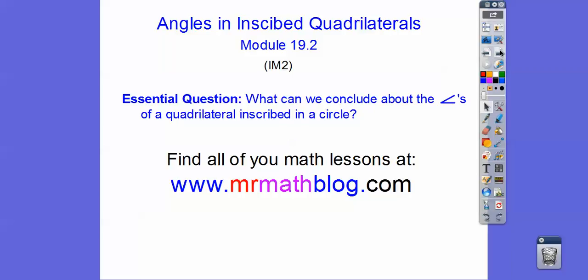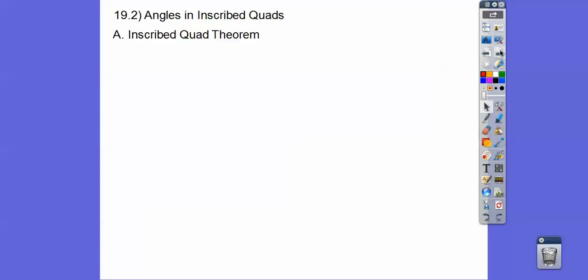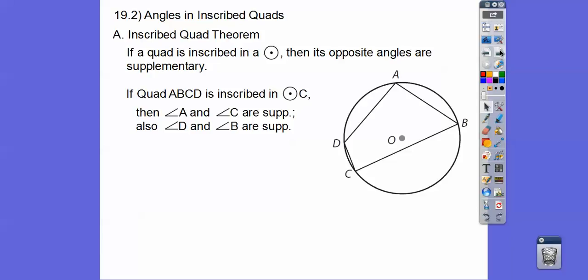What can we conclude about the angles of a quadrilateral that's inscribed in a circle? Here's our theorem, an inscribed quad theorem. If a quadrilateral is inscribed in a circle, then the opposite angles are supplementary. Here's a picture right here. It means that this angle plus this angle is 180, and this angle plus this angle is 180.